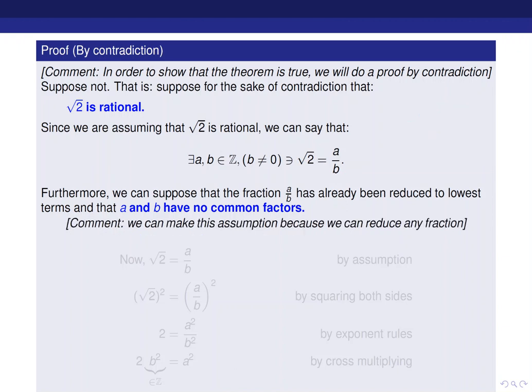And this is important because that's where the contradiction is going to happen later on in the future. So again, as a reminder, we reduced the fraction a over b to lowest terms. In other terms, a and b have nothing in common. So that's something to keep in mind for the future.